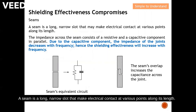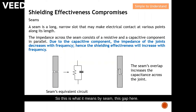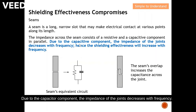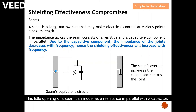A seam is a long narrow slot that makes electrical contact at various points along its length. The impedance across the seam consists of a resistance and a capacitor component in parallel. Due to the capacitor component, the impedance of the joint decreases with frequency, and hence the shielding effectiveness will increase with frequency.